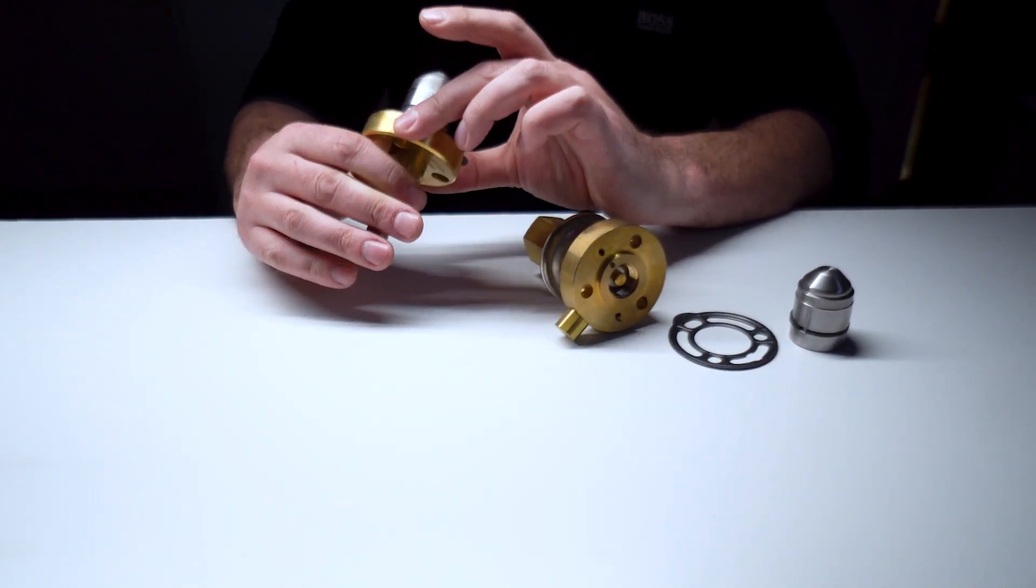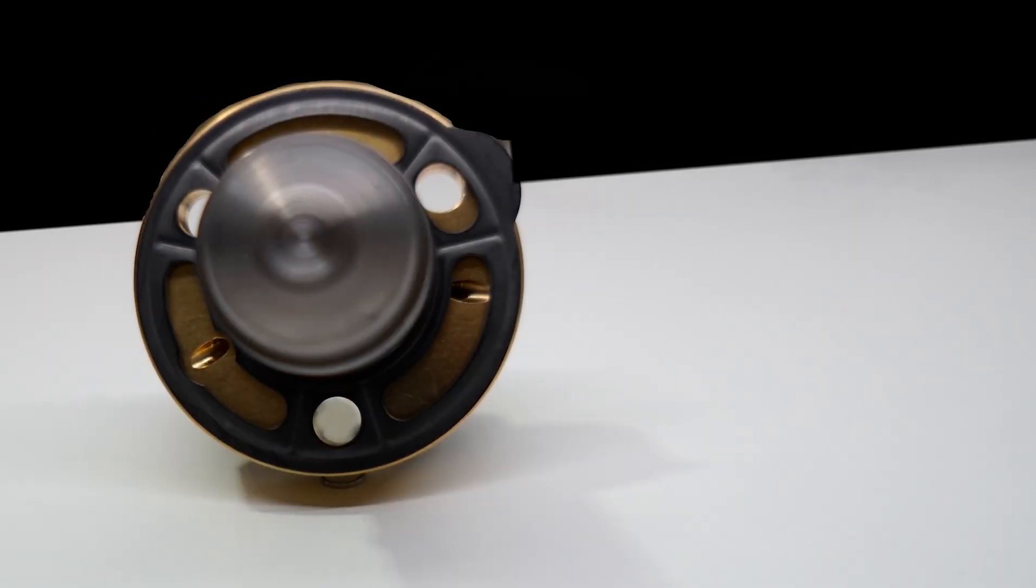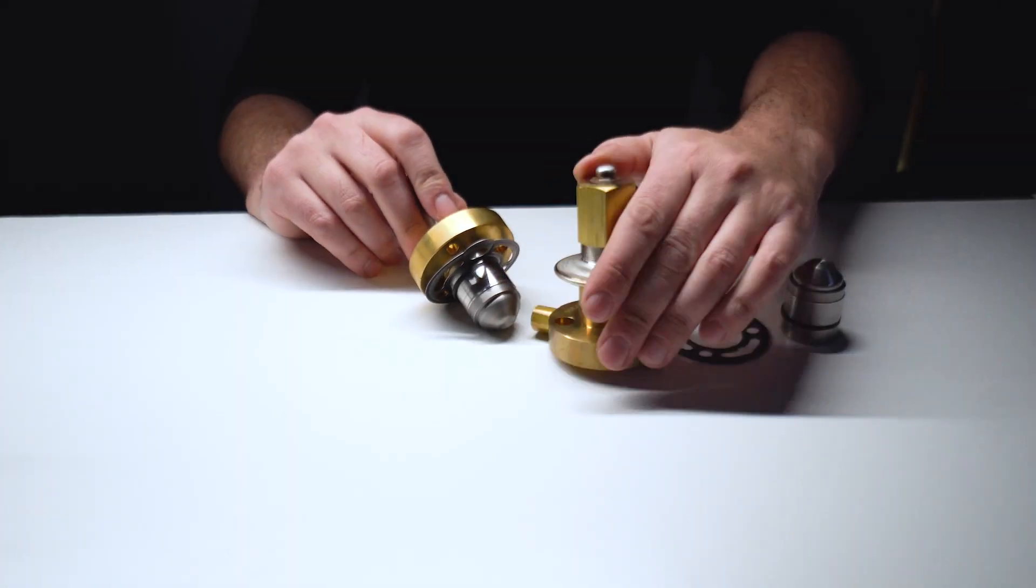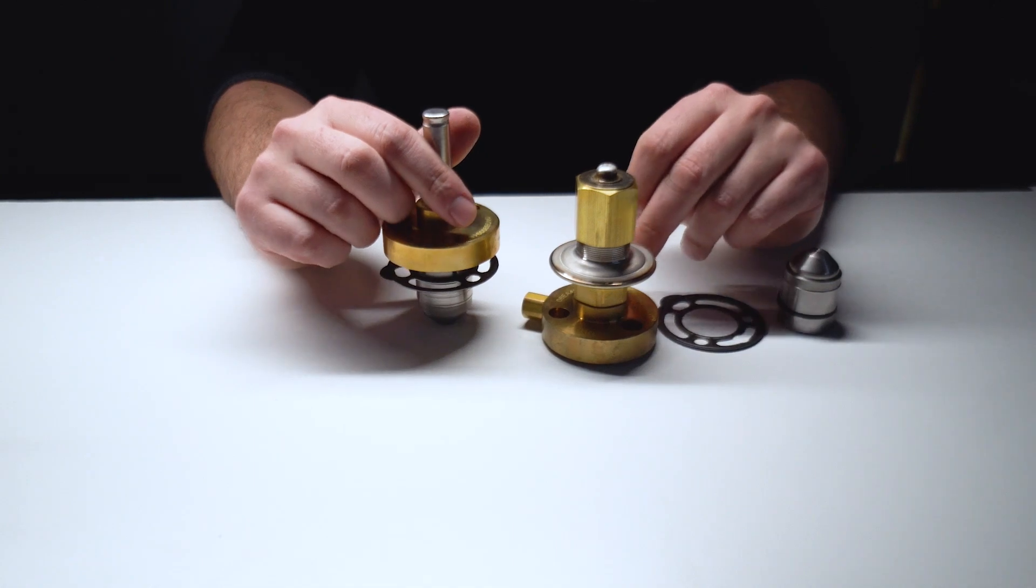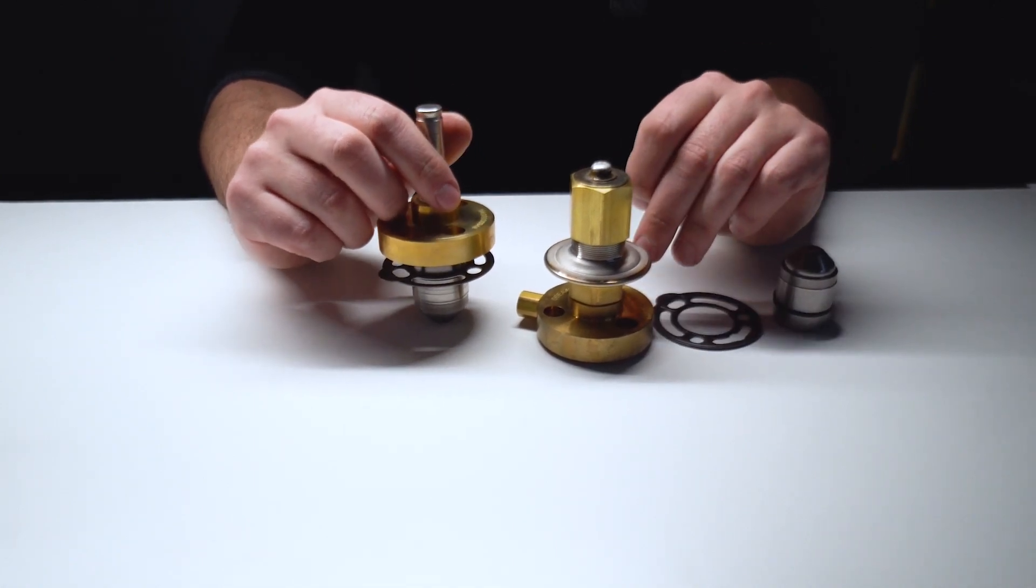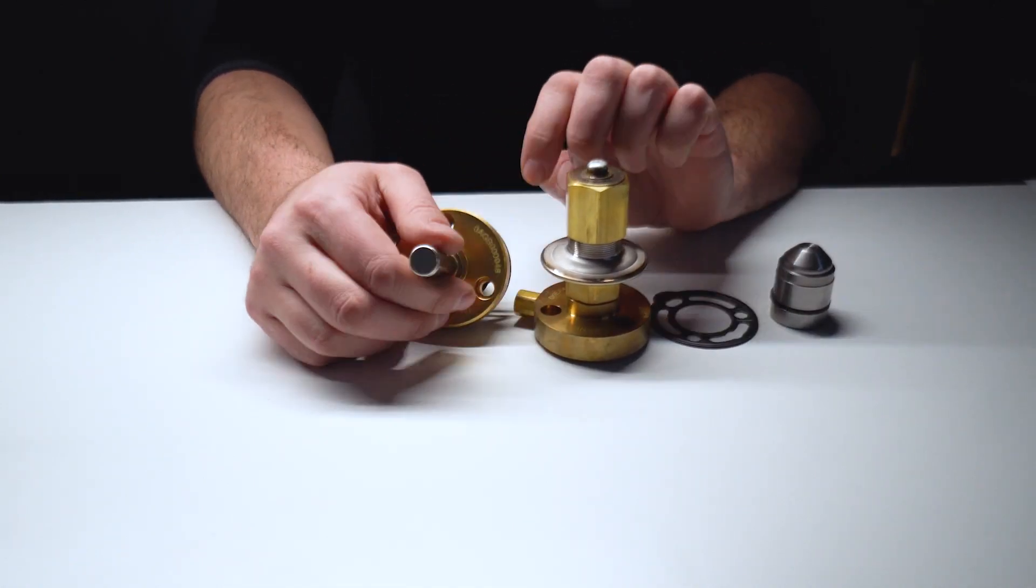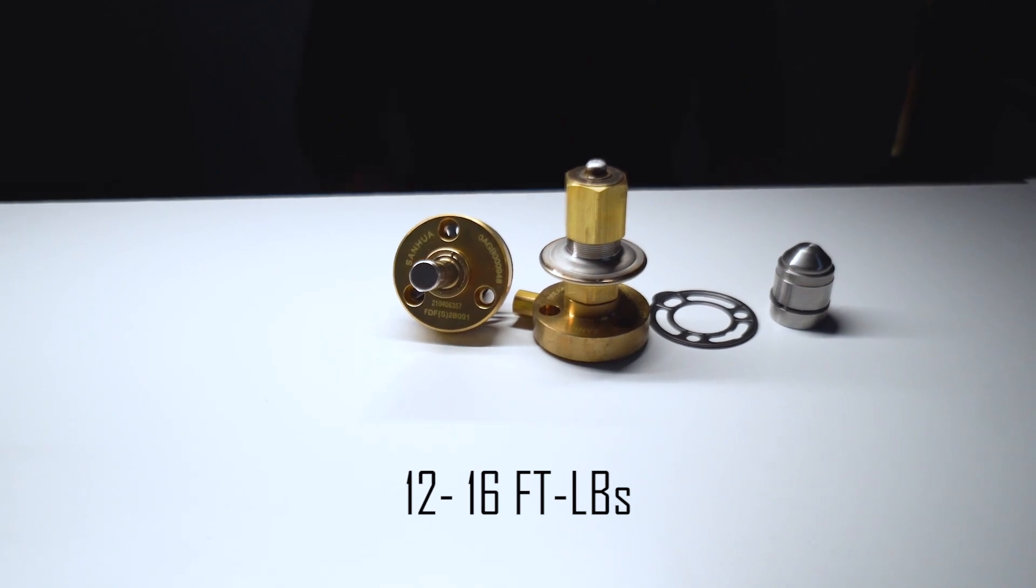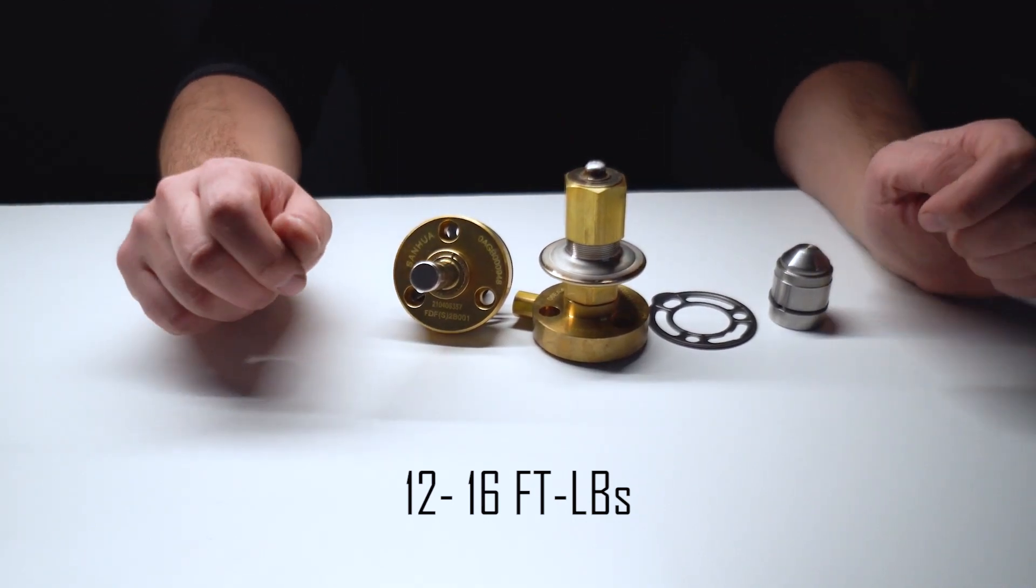The other thing is these gaskets can only really go on one way. The final thing to note is on either of these, when you install them, the allen head cap screws that get put through these holes, the torque spec on those is 12 to 16 foot-pounds.